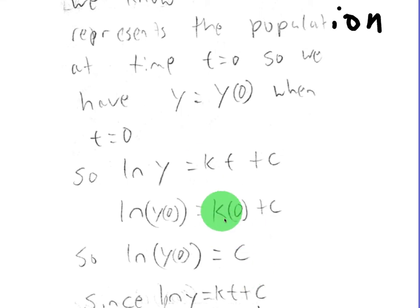Since when t equals 0, y of 0 represents that initial condition. It's just a generic y of 0. Now, k times, this is k times 0 since we're plugging in 0 for t, so that just becomes 0. So our C value is equal to the natural log of y of 0, or y naught.